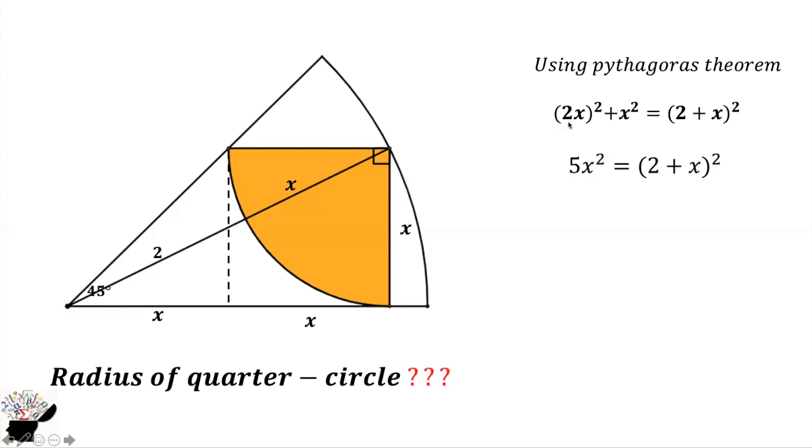From here we can take the square root of both sides. We get x√5 equals 2 plus x. Then we group like terms: x√5 minus x equals 2.